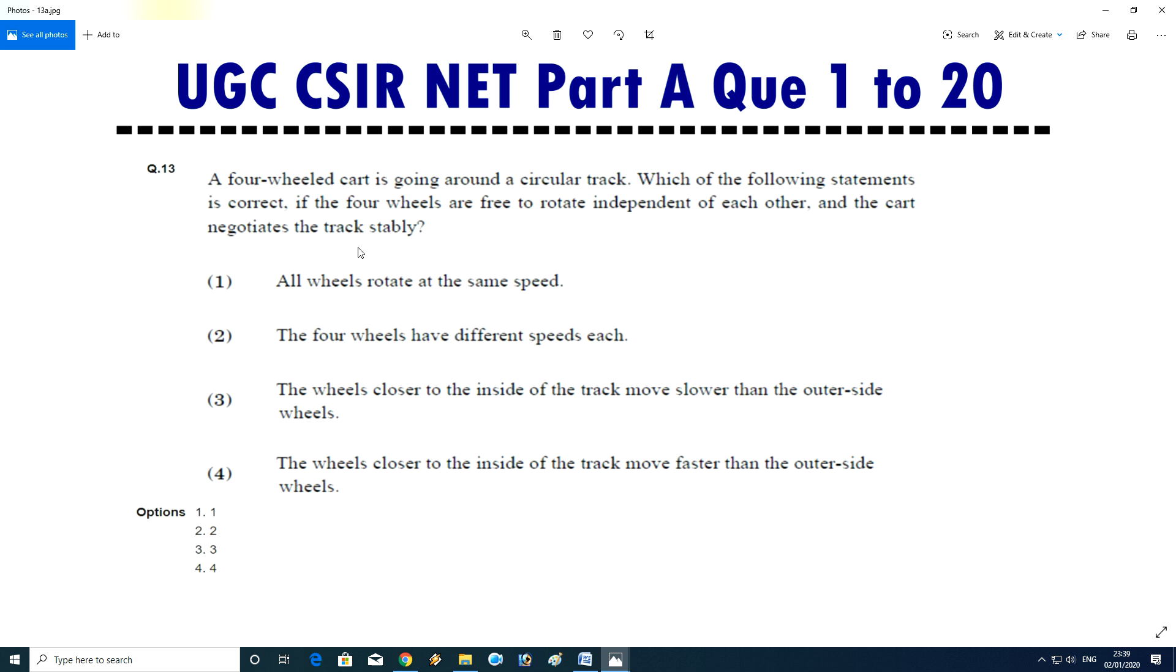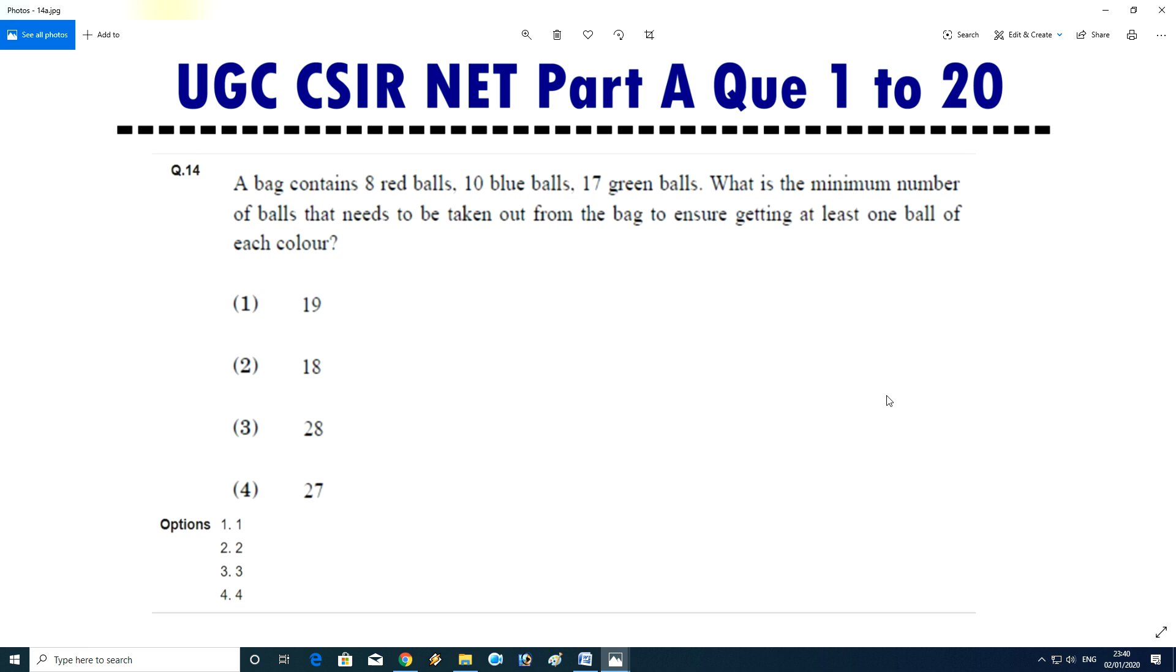Question number 13: a four wheel cart is going around a circular track. Which of the following statements is correct if the four wheels are free to rotate independent of each other and the cart negotiates the track stably? The wheels closer to the inside of the track move slower than the outer side wheels. Answer is third. This answer key is from the CSIR, not mine actually.